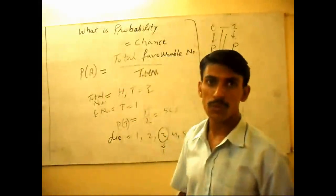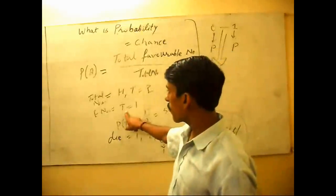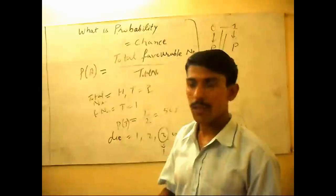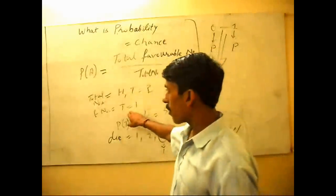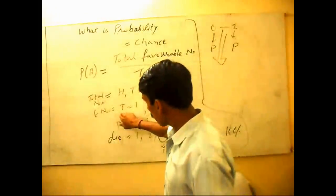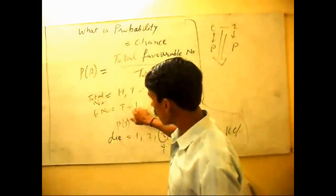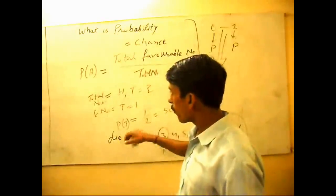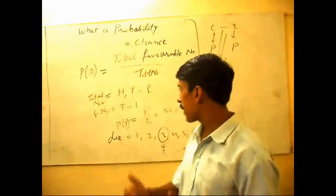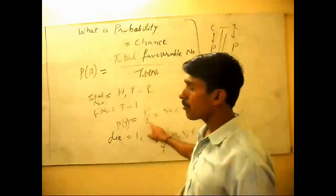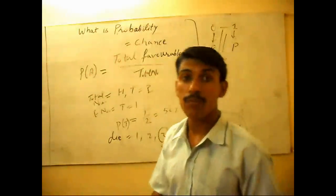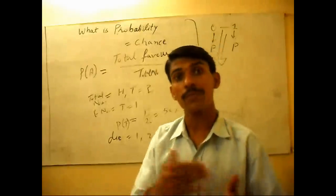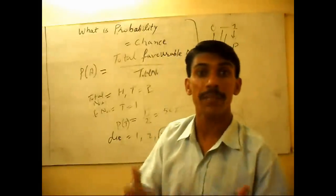Favorable number, head or tail will come, and chances of A is one. One divided by two is the probability of coming tail. It means 50% chance of coming tail and 50% chance of not coming tail.